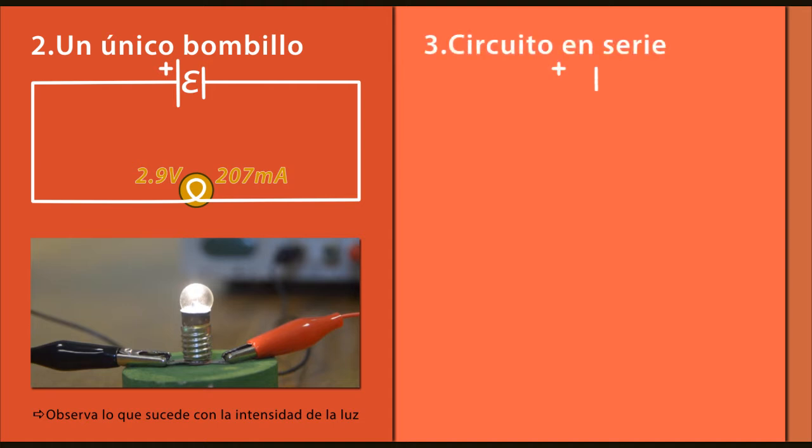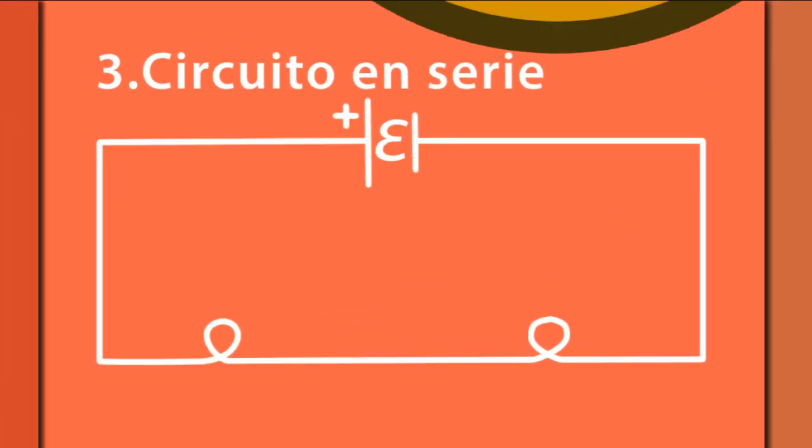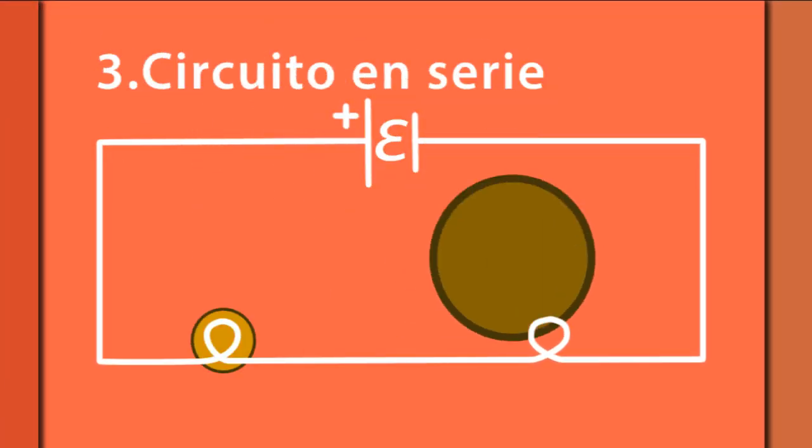Organizaremos ahora un circuito con dos bombillas en serie, donde se puede observar que el flujo de corriente pasa de manera secuencial por un bombillo y después por el otro, sin haber lugar a puntos con derivaciones.